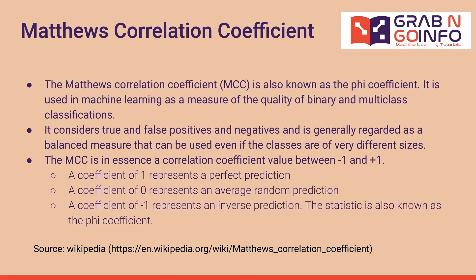The Matthews correlation coefficient, also known as the phi coefficient, is used in machine learning as a measure of the quality of binary and multi-class classifications. It considers true and false positives and negatives and is generally regarded as a balanced measure that can be used even if the classes are of very different sizes. The MCC is a correlation coefficient value between -1 and +1. A coefficient of 1 represents a perfect prediction, 0 represents an average random prediction, and -1 represents an inverse prediction.